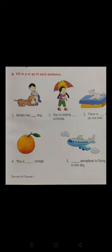Next is: 'This is ___ orange.' Children, what will we fill there — 'a' or 'an'? 'O' is a vowel, so we will fill in 'an'. And this is an orange. Okay.